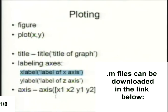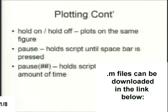For the axis, you use brackets with the two X components and the two Y components. If you type the hold on command and do multiple plots, it'll put them all in the same figure — really handy for comparing variables. Pause holds a script until the spacebar is pressed. In my current research I use it to scroll through cross-correlation plots automatically, pausing for a fraction of a second each, so I can quickly identify which ones are good.